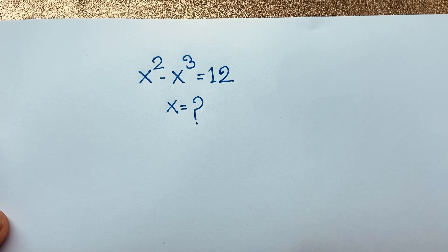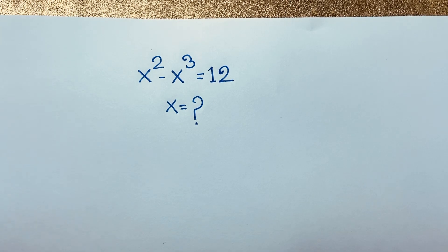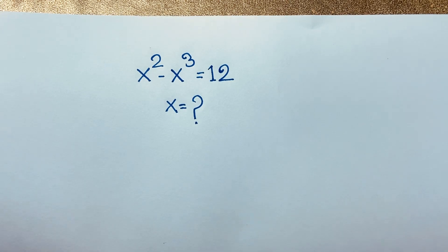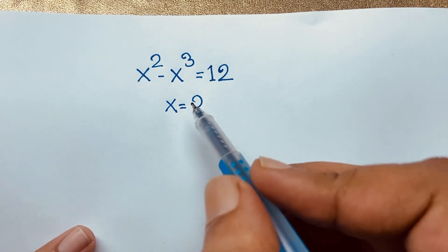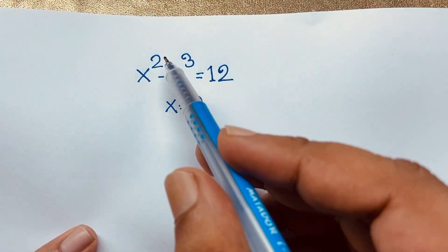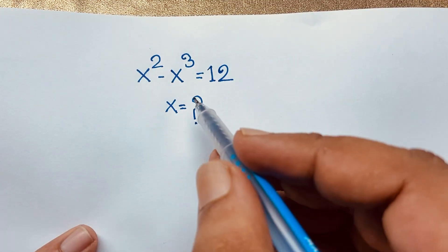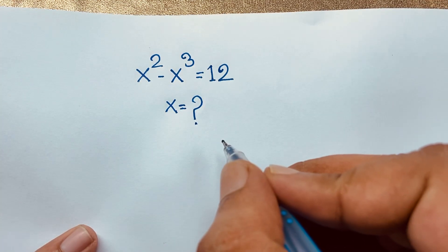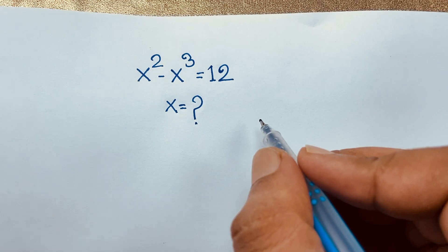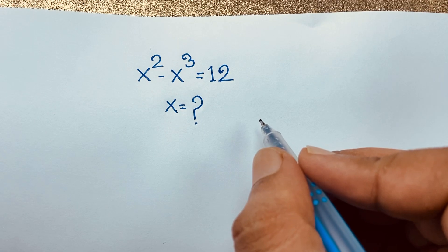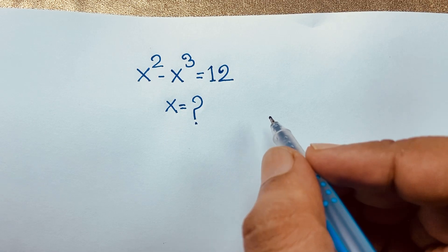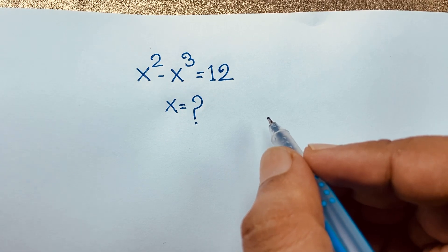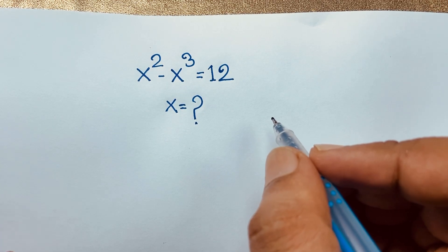Hello everyone. In this video we have solved a nice German math olympiad question. The question is x to the power 2 minus x cubed is equal to 12. x is equal to what? How to solve this interesting exponential math problem?